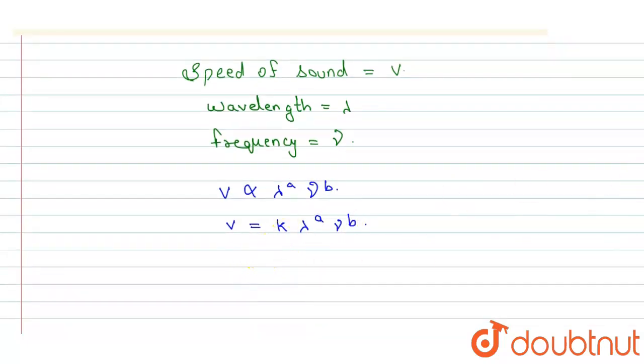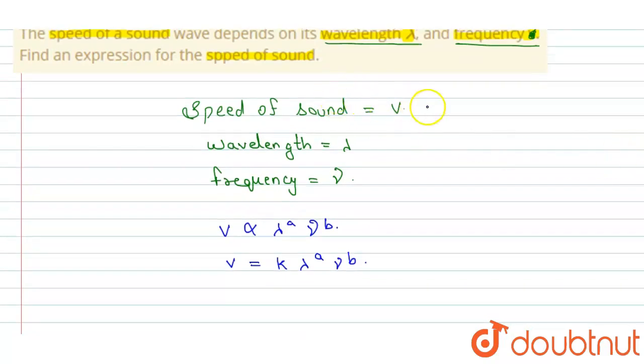Now we know the dimension of v will be LT^-1. Speed of sound will be LT^-1, and the wavelength will be measured in L^1, and frequency, the dimension of frequency is T^-1.